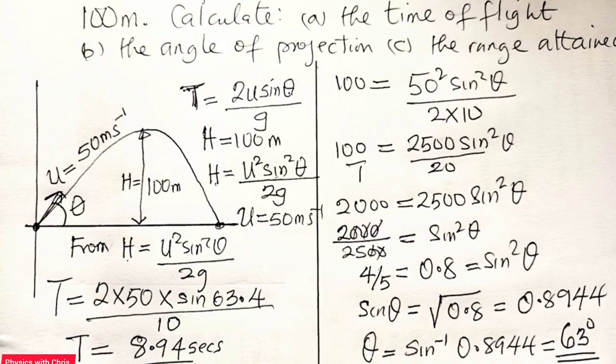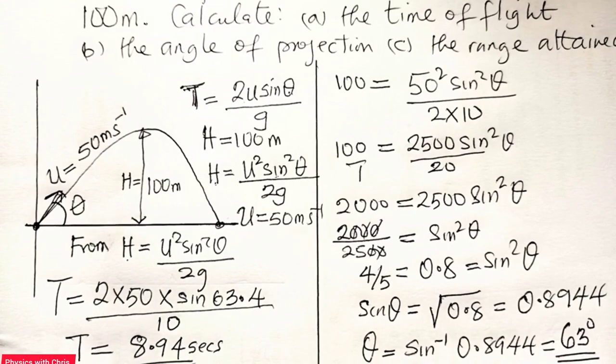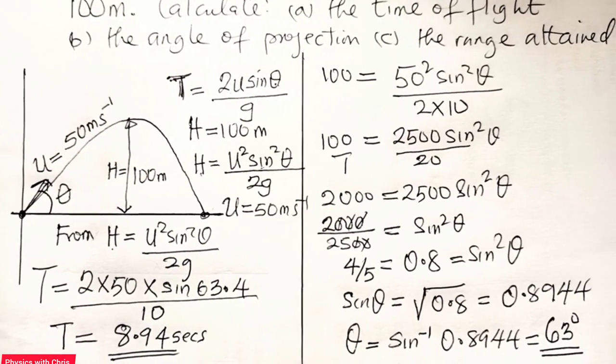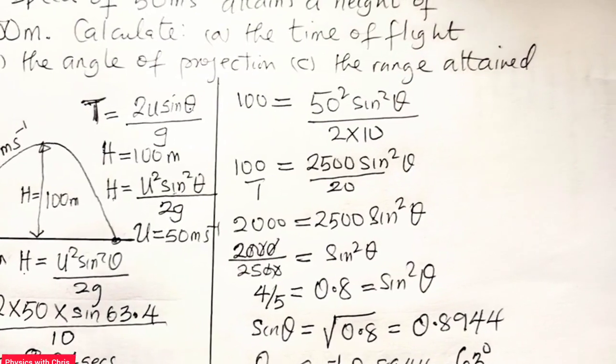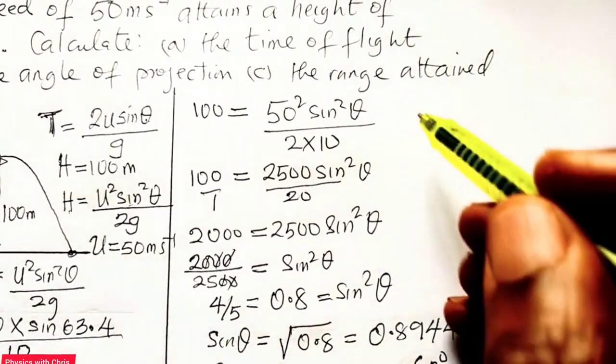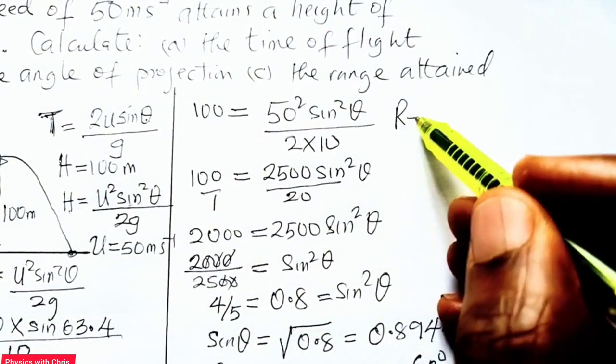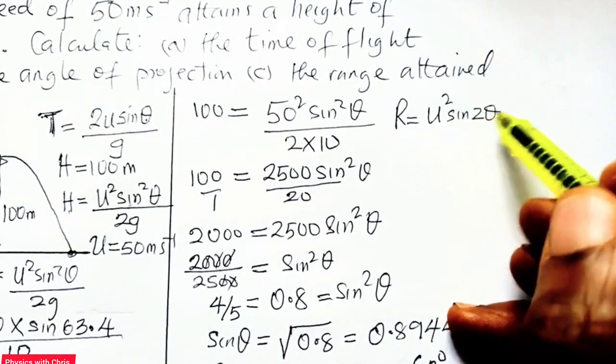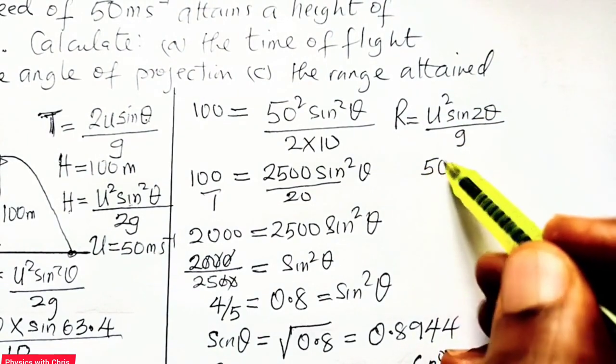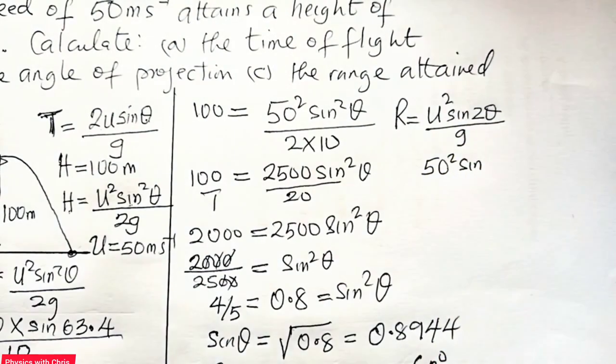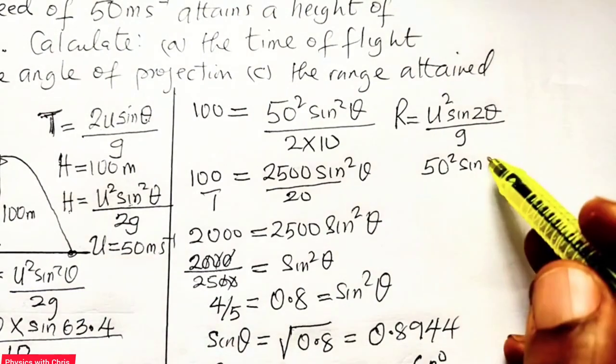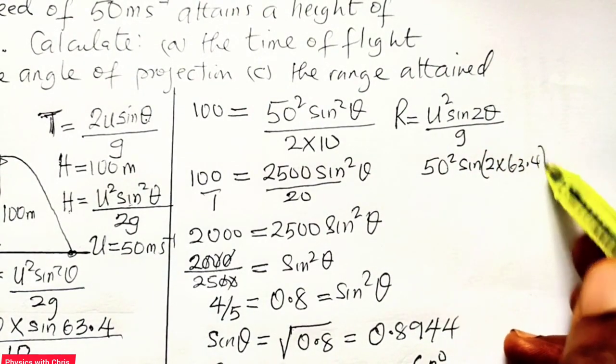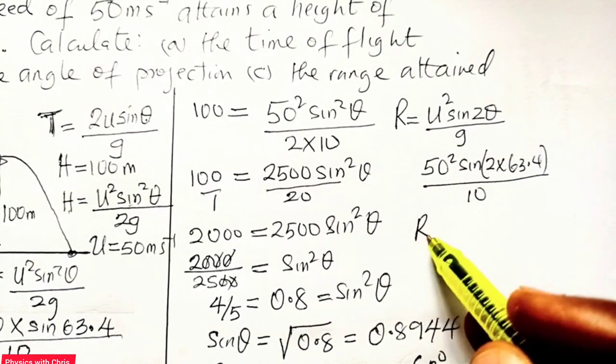The next question is to calculate the range attained by the projectile. And I believe you remember the equation for the range of the projectile. The range is given by U squared sine 2 theta divided by g. That is 50 squared sine 2 theta. Since angle theta is 63.4, that's 2 times 63.4 divided by g, which is 10. When I compute this now, what will be the range of the projectile?